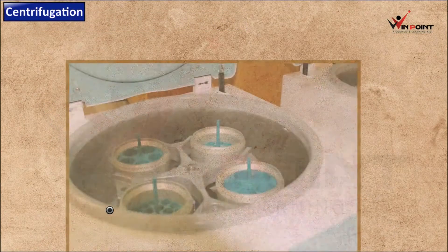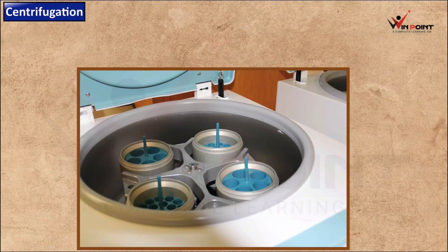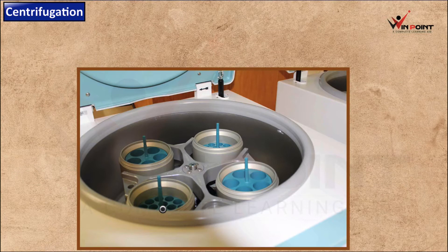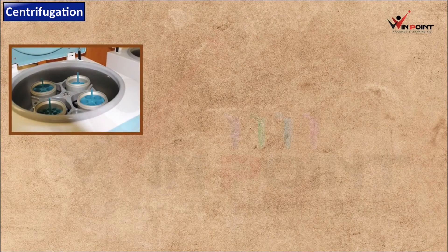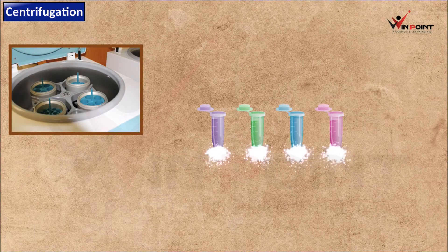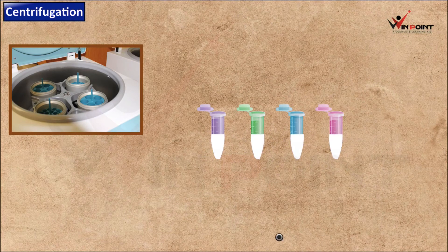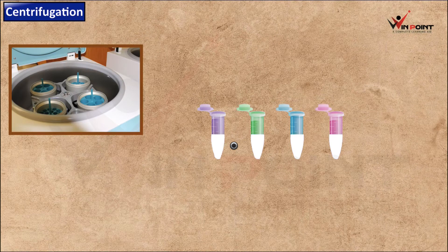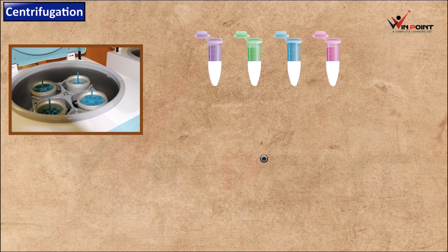The first method is centrifugation. Centrifugation simply means rotation. If we want to separate a mixture that consists of high density particles and low density particles — for example, consider milk — milk contains both high density particles and low density particles.